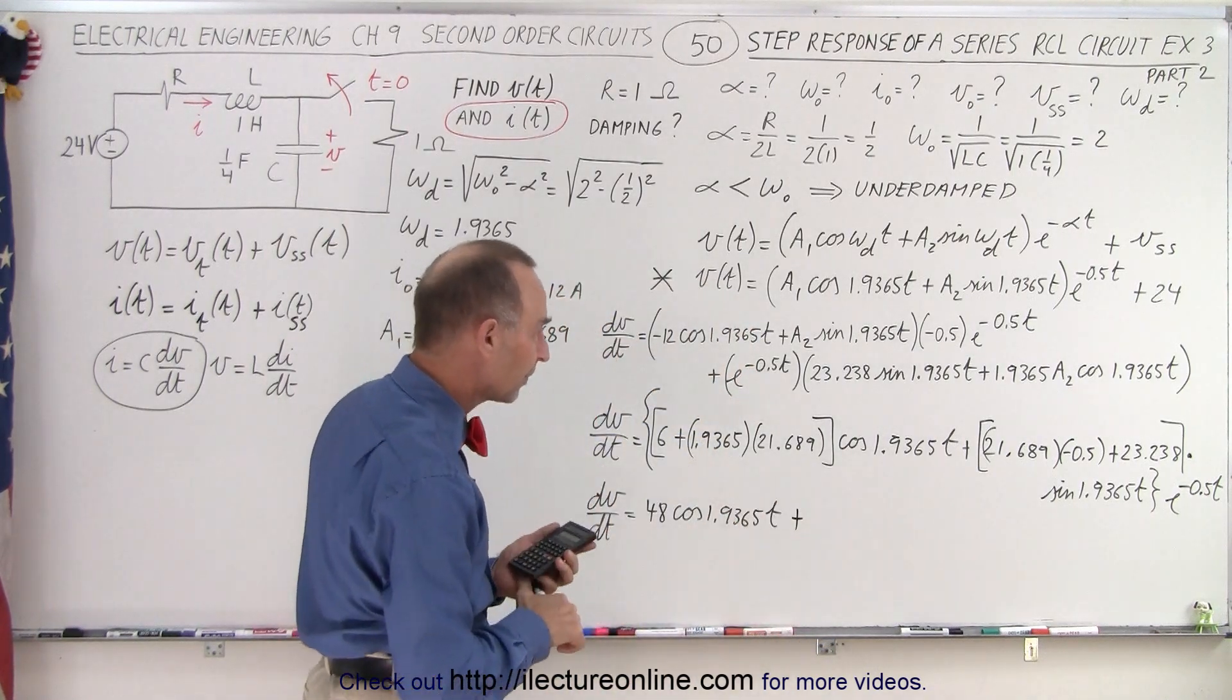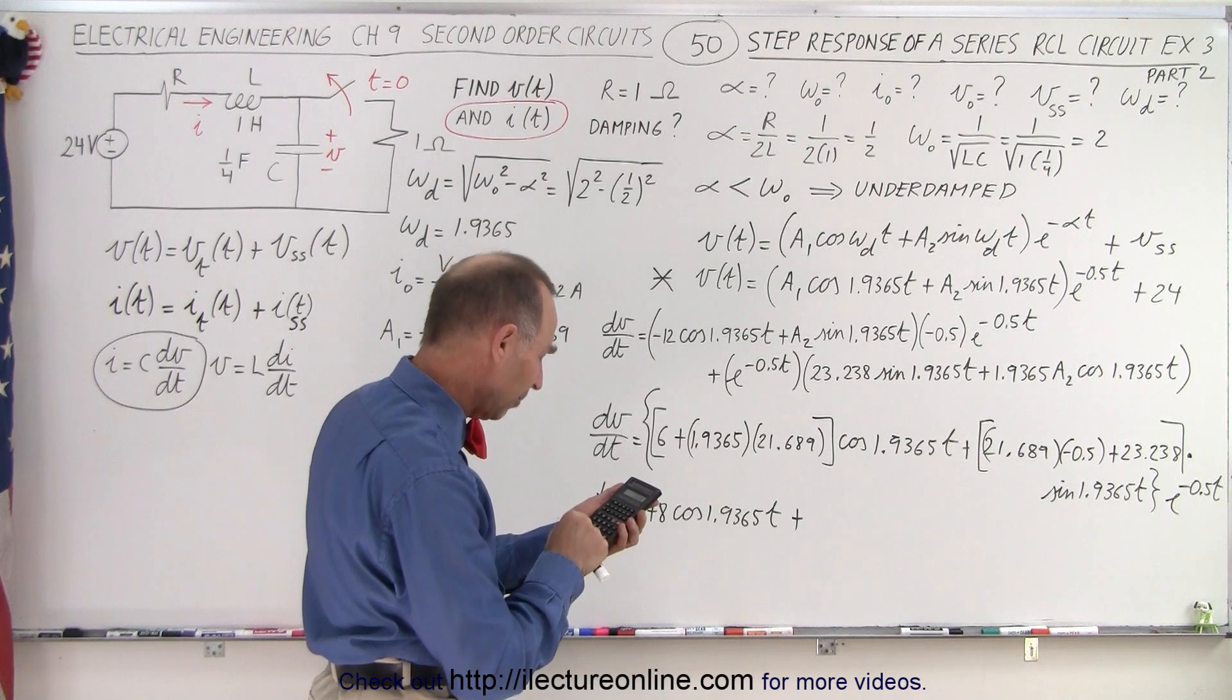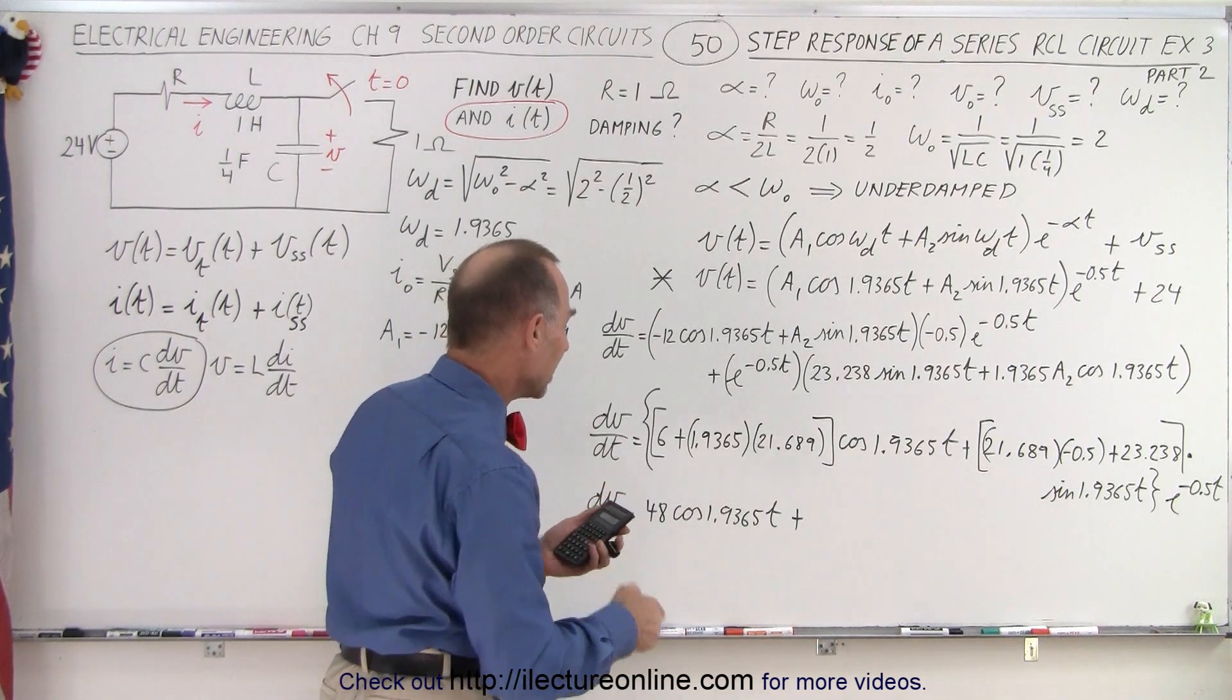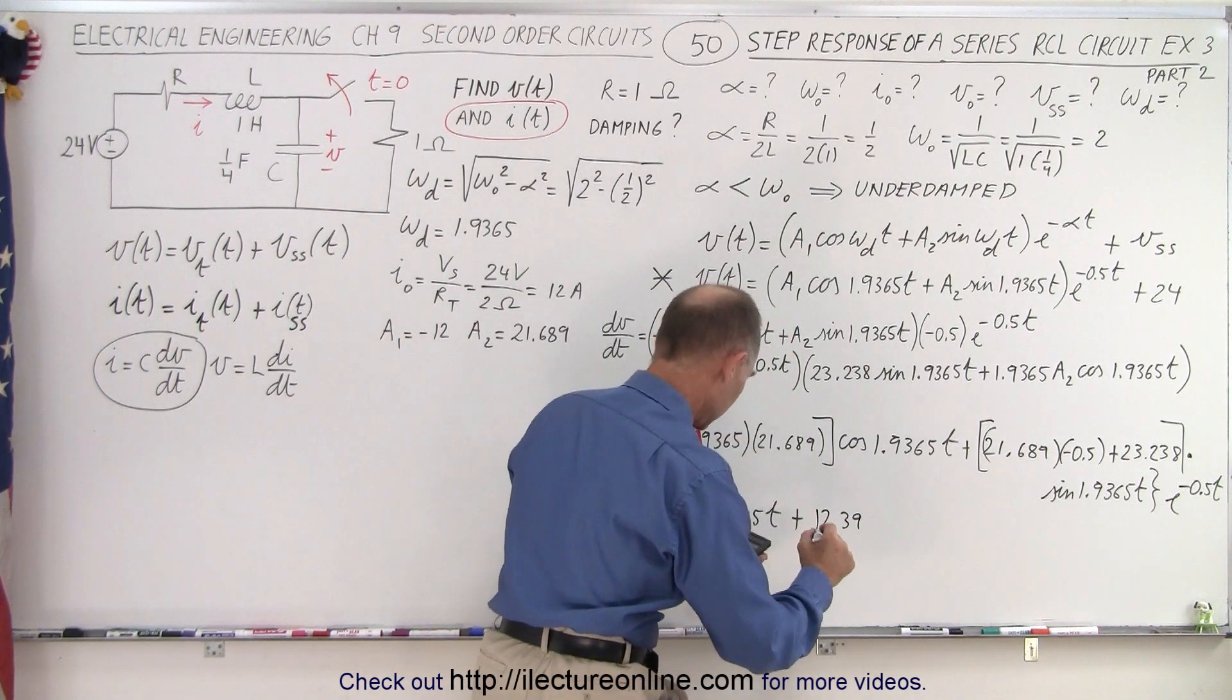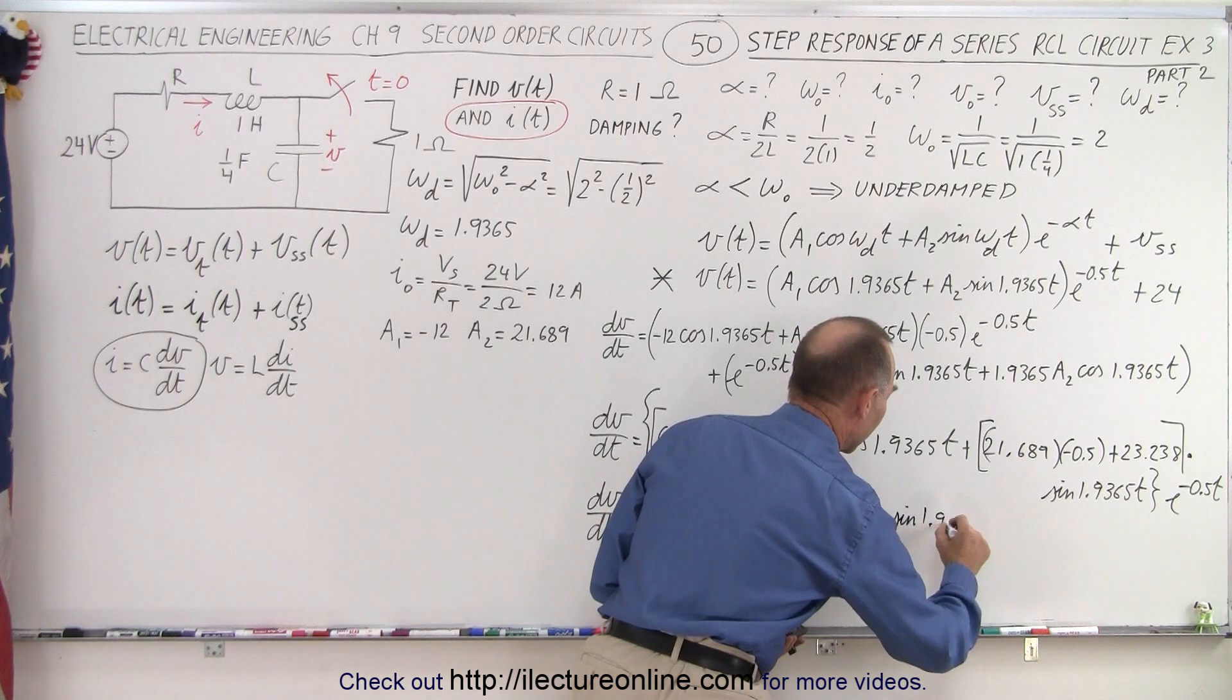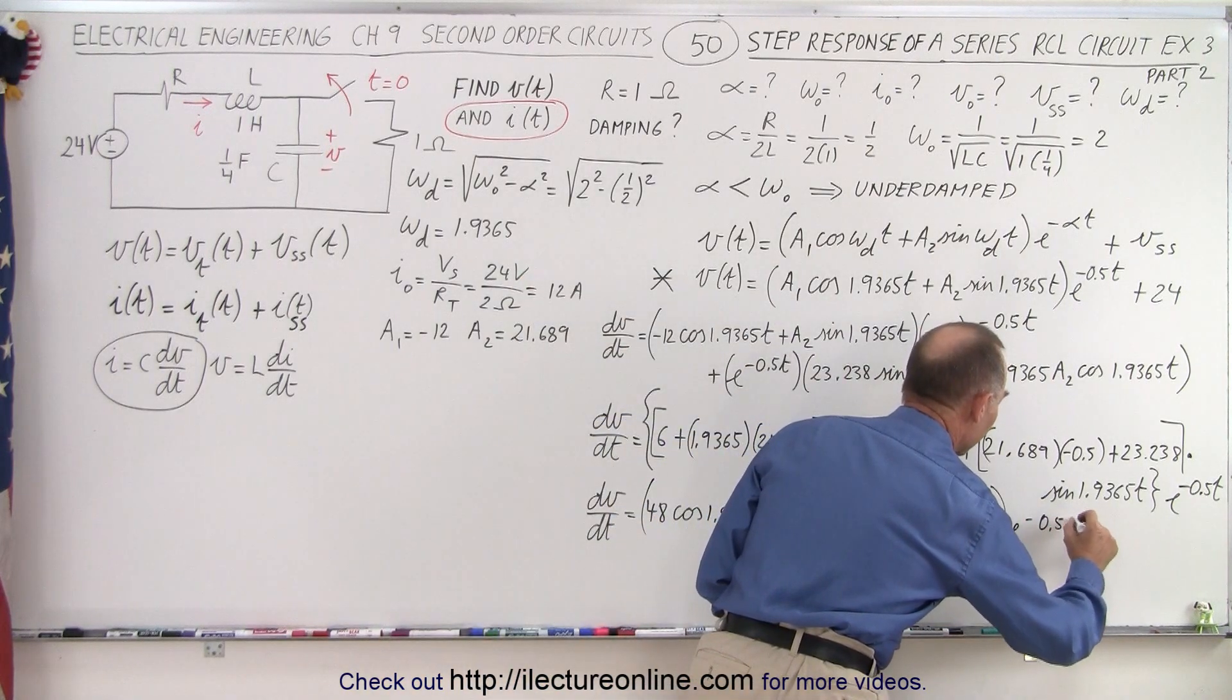I think it's a plus, we'll find out. We have 23.238 minus 0.5 times 21.689. That's 12.39. So it would be plus 12.3935, I'll just keep a few decimal places, times the sine of 1.9365t. And then the whole thing is multiplied times e to the minus 0.5t.